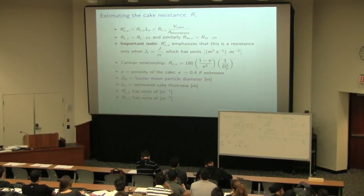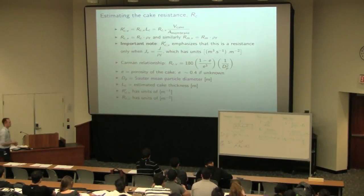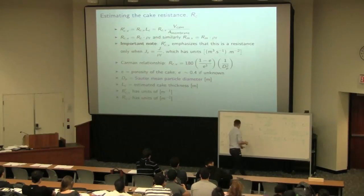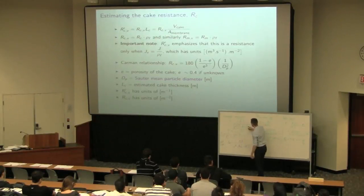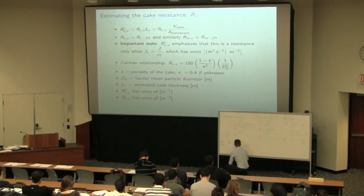Now, this equation then that we can use to estimate the cake thickness is the Carman equation, RCV. So let's just emphasize that RCV is, this is the cake thickness, LC times RC times rho. So RCV dash is the original RC times the cake thickness, times the permeate's density.